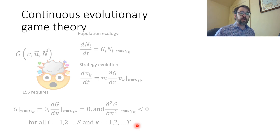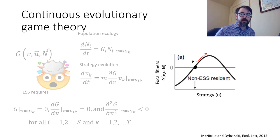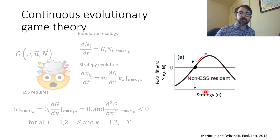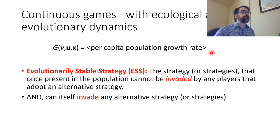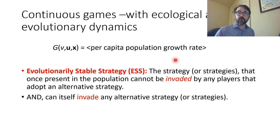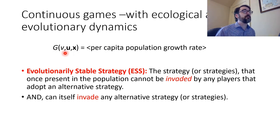In case the mathematical notation is stressing you out, the key thing to understand is that in the matrix game we were basically looking for which couple out of four numbers were the biggest. Now we need to look among an infinite number of strategies and an infinite number of possible fitness outcomes, and we expect selection to move up these gradients. So if we started here at a non-ESS resident, we would expect evolution to proceed up towards this peak.